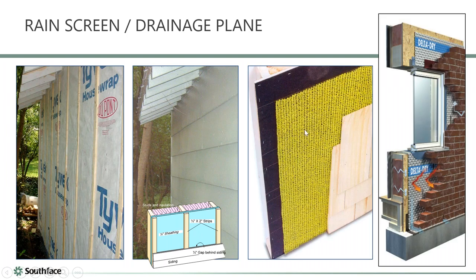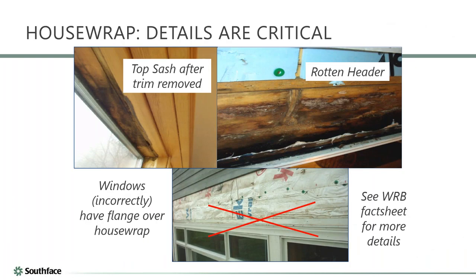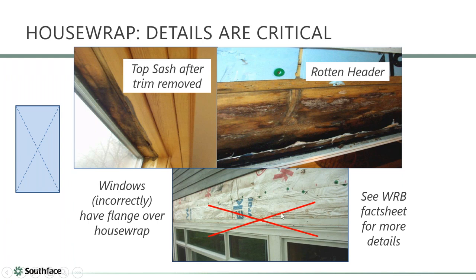Products like 'Home Slicker' — a mesh spacer mat — create the drainage gap behind cladding. Getting house wrap details right is critical. A common mistake: wrapping over the rough opening, cutting an X, and folding all four triangles inward. The top triangle fold is wrong — when you install a flanged window over it, wind-driven rain gets behind the flange and rots out the header. This failure was seen on a house less than one year old.